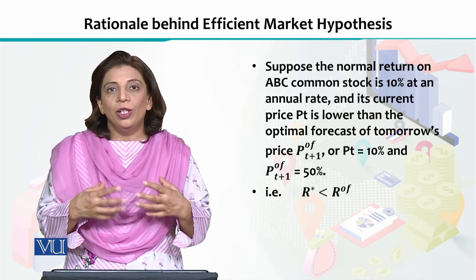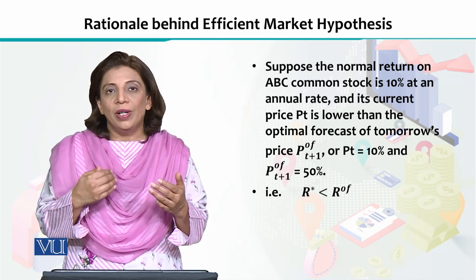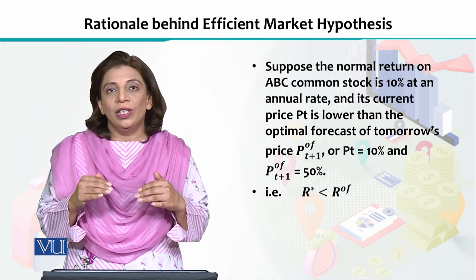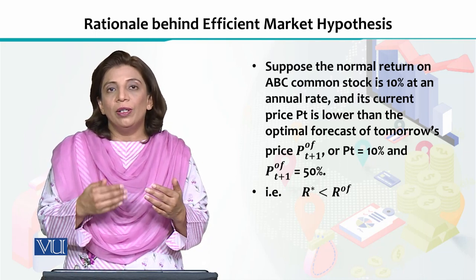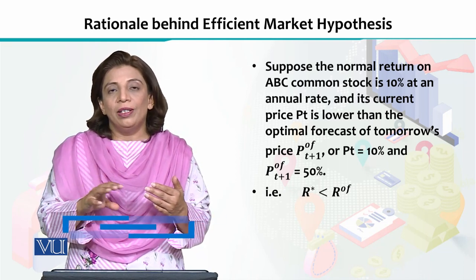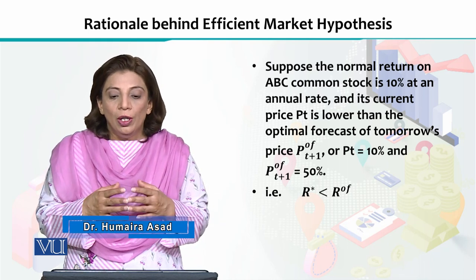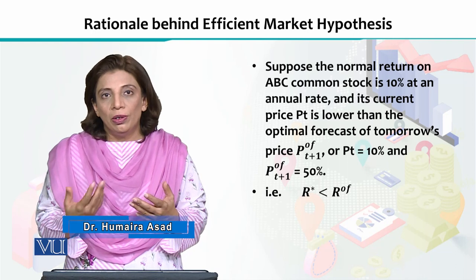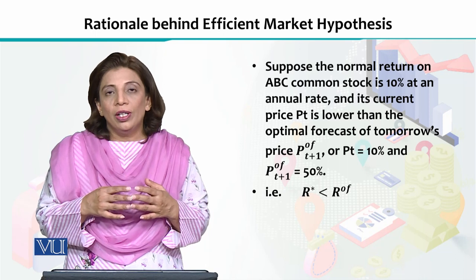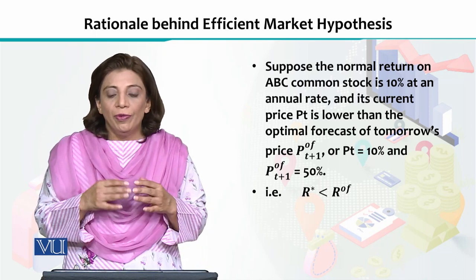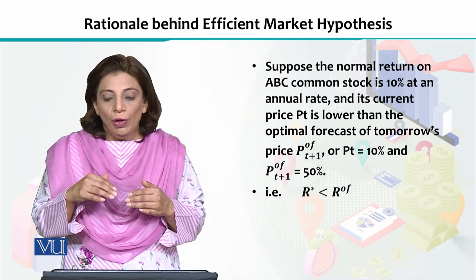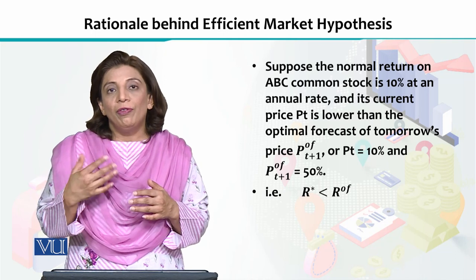What is the story behind fluctuations in the prices of stocks, how it is determined, how there are fluctuations, and how extra profit earned by any investor can be wiped away so that equilibrium is eventually obtained? Suppose there is a common stock called ABC, and the normal return on that stock is supposed to be 10%, and we expect that in the future the price of this stock will go up by 50%.